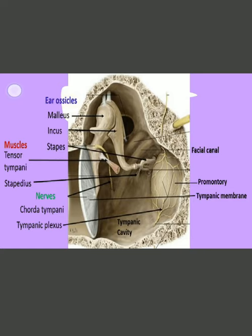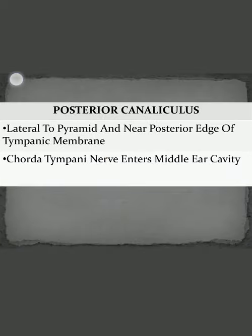The fourth feature of the posterior wall is the posterior canaliculus, which is lateral to the pyramid and near the posterior edge of the tympanic membrane. Through this posterior canaliculus, the chorda tympani nerve — a branch of the facial nerve — enters into the middle ear cavity.